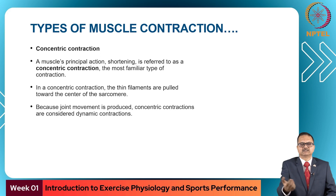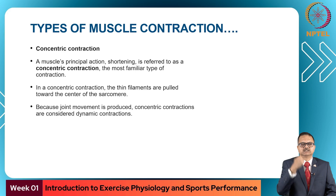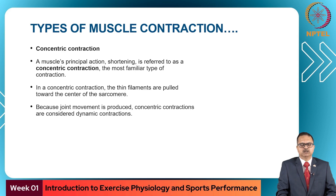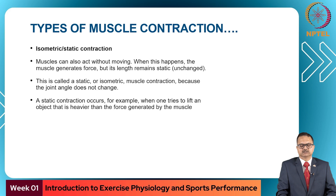A muscle's principal action — shortening — is referred to as concentric contraction, and this is the most familiar type. In a concentric contraction, the thin filaments are pulled towards the center of the sarcomere. Because joint movement is produced, concentric contractions are also called dynamic contractions.